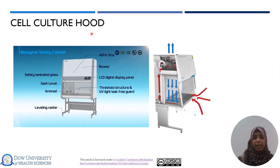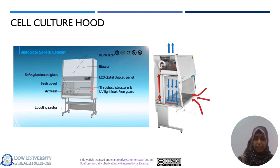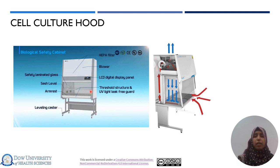This is a pictorial representation of a basic cell culture hood. It includes a HEPA filter at the top, a section with a blower and laminated glass, and the sash of the biological safety cabinet. There is a particular level up to which you can raise the sash; raising it further will cause beeping because it disturbs the airflow and creates contamination problems. There is also an LCD digital display panel showing all settings, including airflow velocity, and a leveling caster with wheels for easy repositioning.